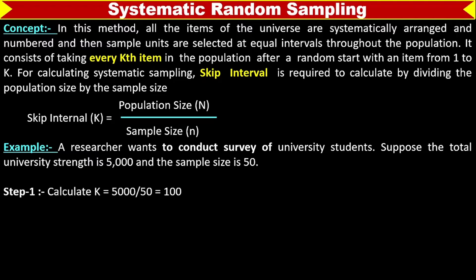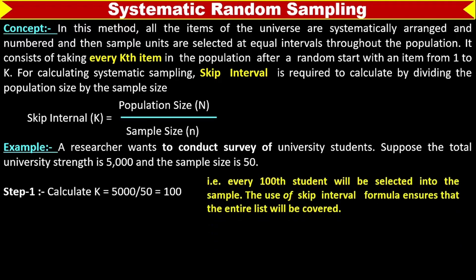Calculate k. K means skip interval, that is total population size divided by sample size: 5000 over 50, that is 100. So every 100th student will be selected into the sample. The use of skip interval formula ensures that the entire list will be covered.